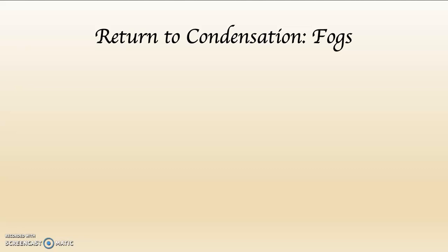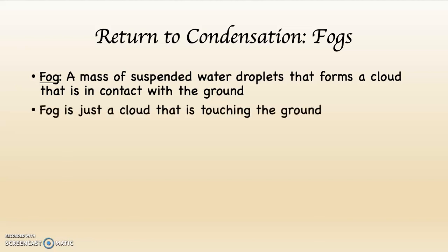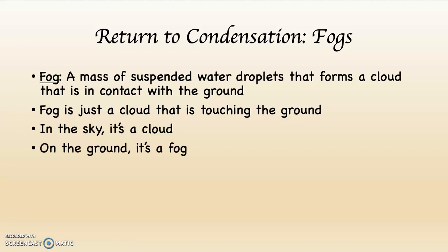Back to condensation. We end this with fogs. Fog is a mass of suspended water droplets that forms a cloud that is in contact with the ground. That's all fog is. Fog is just a cloud — something we've already studied — that's touching the ground. When it's in the sky, we call it a cloud. When it's on the ground, we call it fog.